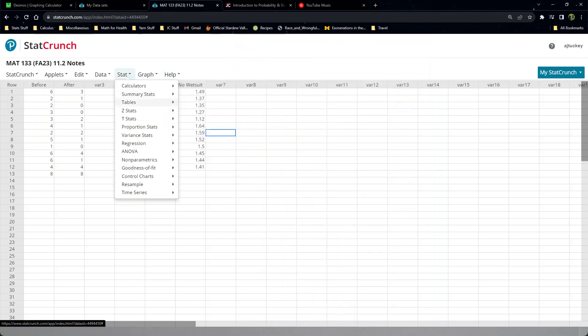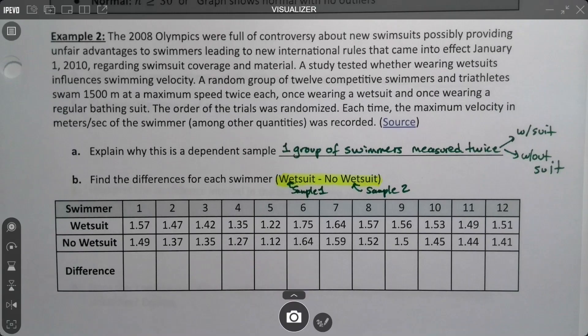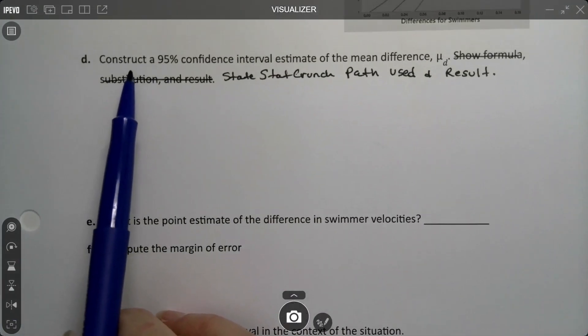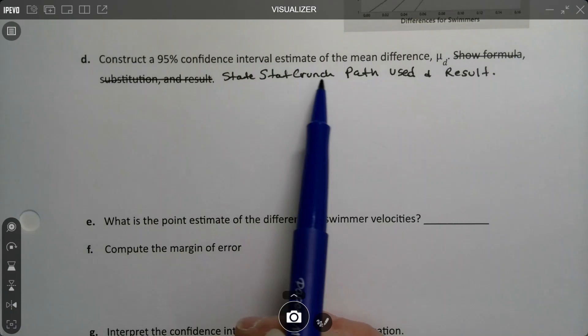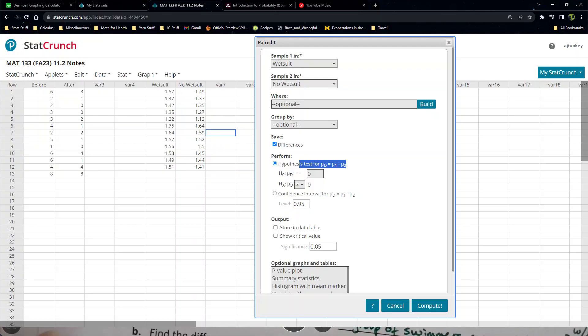It's telling me that sample one is the wetsuit group and sample two is the no wetsuit group. I'm going to save my differences. I could run a hypothesis test but this is a confidence interval question, so I could just do that instead. I can run the confidence interval at the same time that I find the differences and kill two birds with one stone.